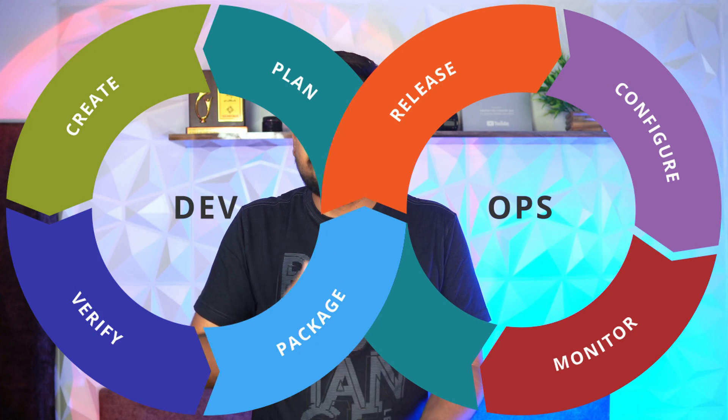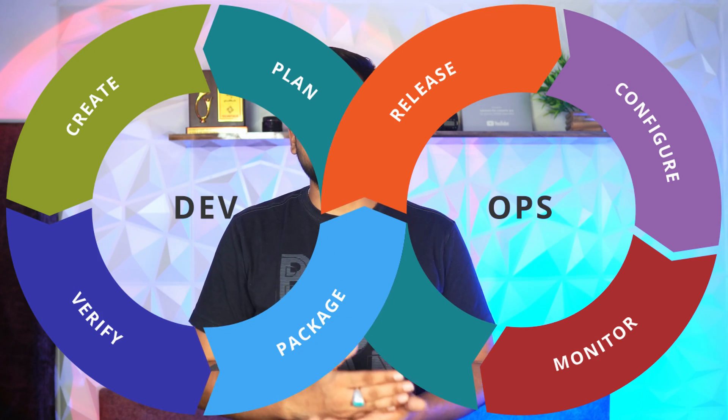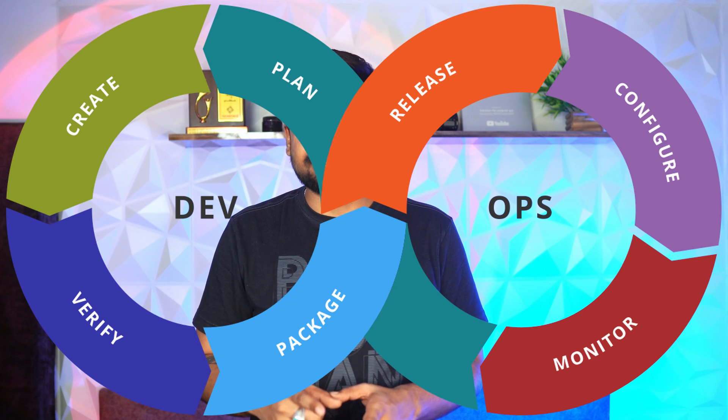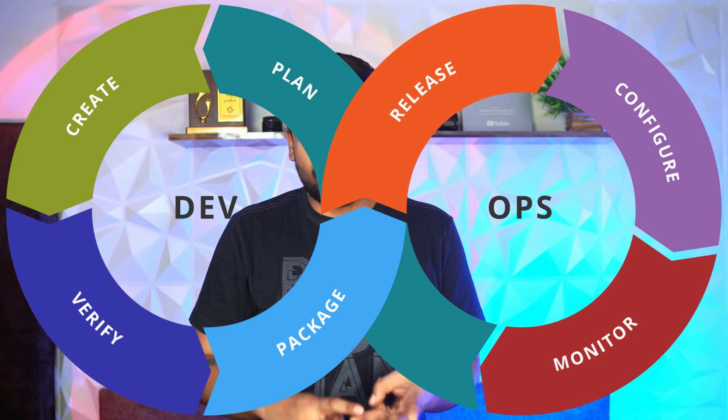In summary, as a DevOps engineer this is the life cycle: you plan a product, decide to code it, develop it, test it, and release it — that's the development phase. Then you start the operation phase where you deploy it, operate it, and monitor it. You can guess why DevOps is often represented as an infinite loop — because in cloud all of these phases are continuous and seamless.